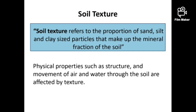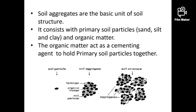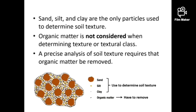Soil physical properties and movement of air and water through the soil are affected by soil texture. As you can see in the figure, soil aggregates are the basic unit of soil structure. Soil aggregates consist of clay, sand and silt-like primary soil particles and organic matter.